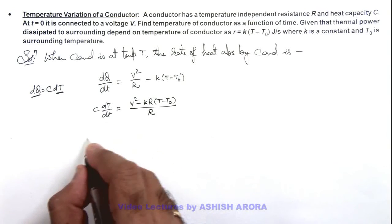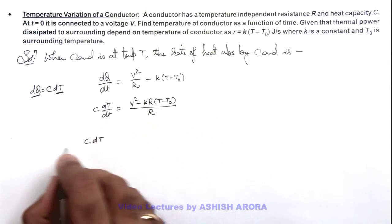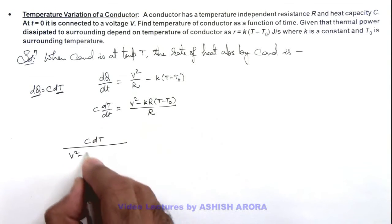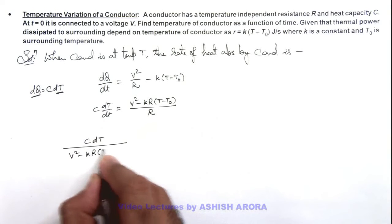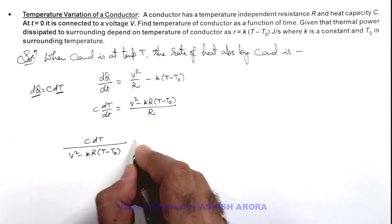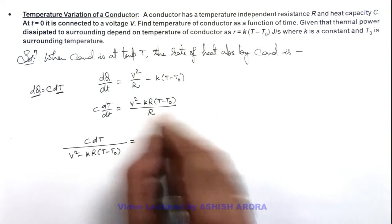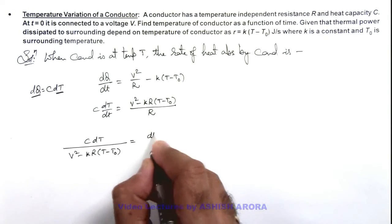And further we can write it as C dT divided by (V² - kR(T - T₀)) equals dT/R.